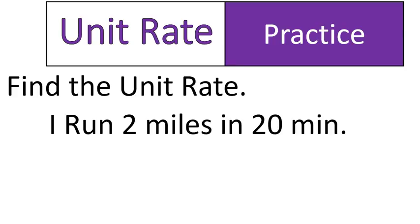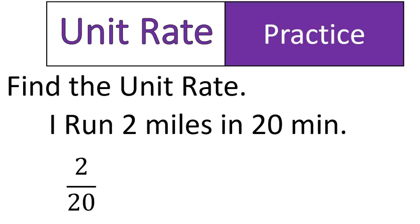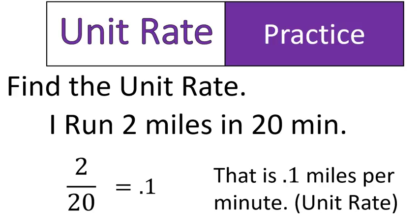Let's do another one. Try this one out: I run two miles in 20 minutes. Try and find the unit rate for that. There are actually two different unit rates you could have discovered. You could have said 20 divided by 2 equals 10 — and that is 10 minutes per mile, or how many minutes it takes to run each mile. Or you could have flipped them and done 2 divided by 20, which gives you 0.1, or one tenth. That means I run one tenth of a mile per one minute. Whatever is on the top is what you say first, and whatever is on the bottom is what you say second. So it's 0.1 miles per minute. That's how unit rates work.